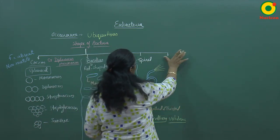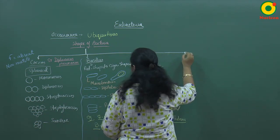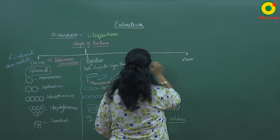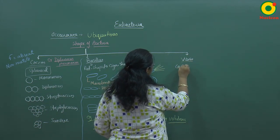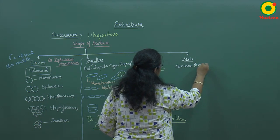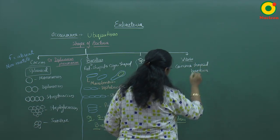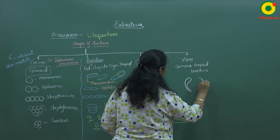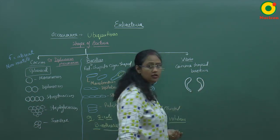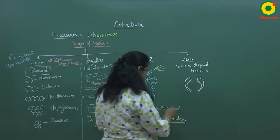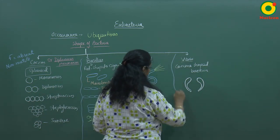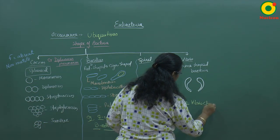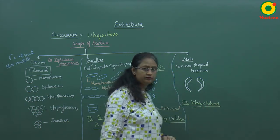The fourth shape of bacteria is vibrio, also known as comma-shaped bacteria. An example of this type is Vibrio cholerae.